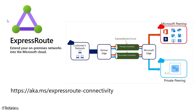The first type is ExpressRoute, which allows you to extend your on-premises network into the Microsoft cloud. With ExpressRoute you get reliable connectivity, fast speeds, consistent latencies, and higher levels of security than sending traffic across the public internet — operating at layer 3 between your on-premises and Microsoft cloud facilities. As you can see in this diagram, there's connectivity between the Azure virtual network and other cloud services such as Office 365.